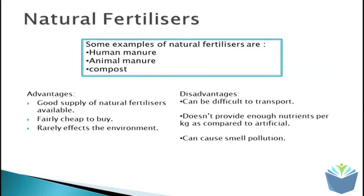With natural fertilizers, here are some examples: you have human manure, animal manure, and compost. Some of the advantages — and this is particularly advantageous to British farmers — is that they have a good supply of natural fertilizers available. Some human waste is recycled, and farmers may also recycle the waste from their animals and spread that on their crops.